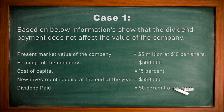Now we are going to a case to understand whether the formula shows relevancy or irrelevancy. Case one: based on the below information, show that dividend payment does not affect the value of the company. Present market value is $5 million at $10 per share. Year earnings are $500,000. Cost of capital is 15%. New investment required at the end of the year is $550,000. Dividend paid is 50% of earnings. We will analyze this in two parts: if dividend is not paid, and if dividend is paid.